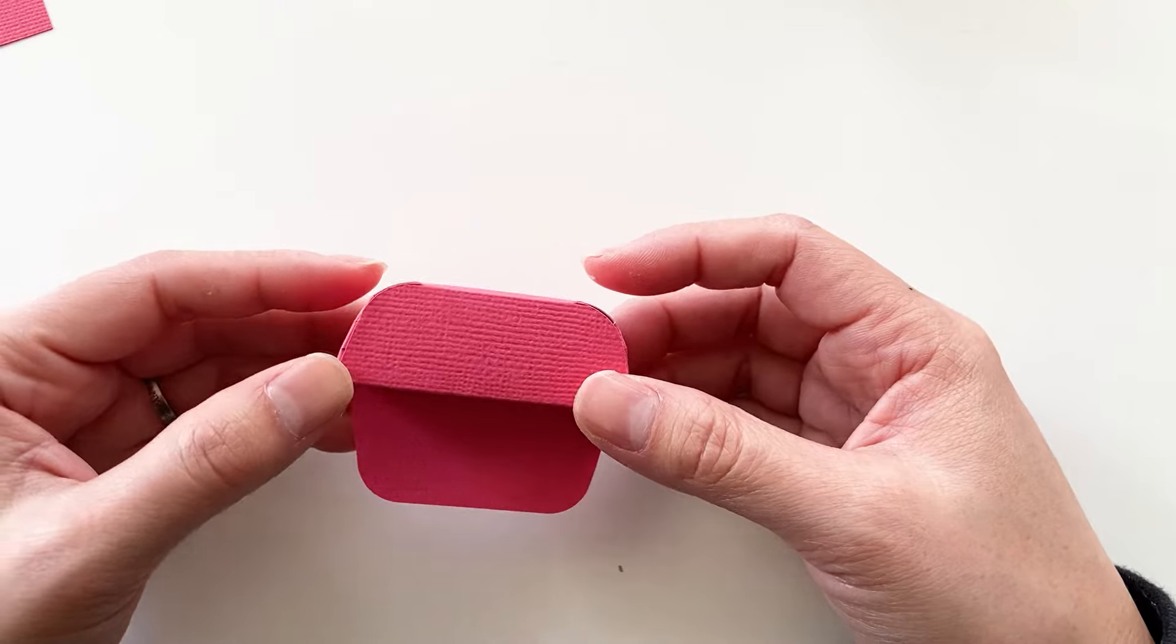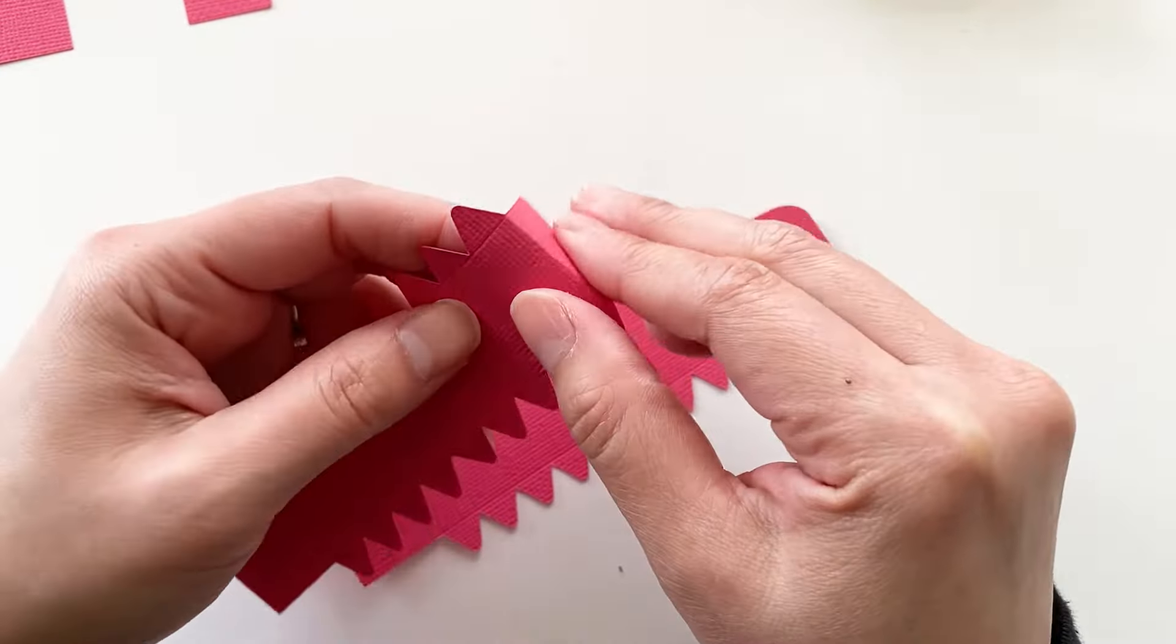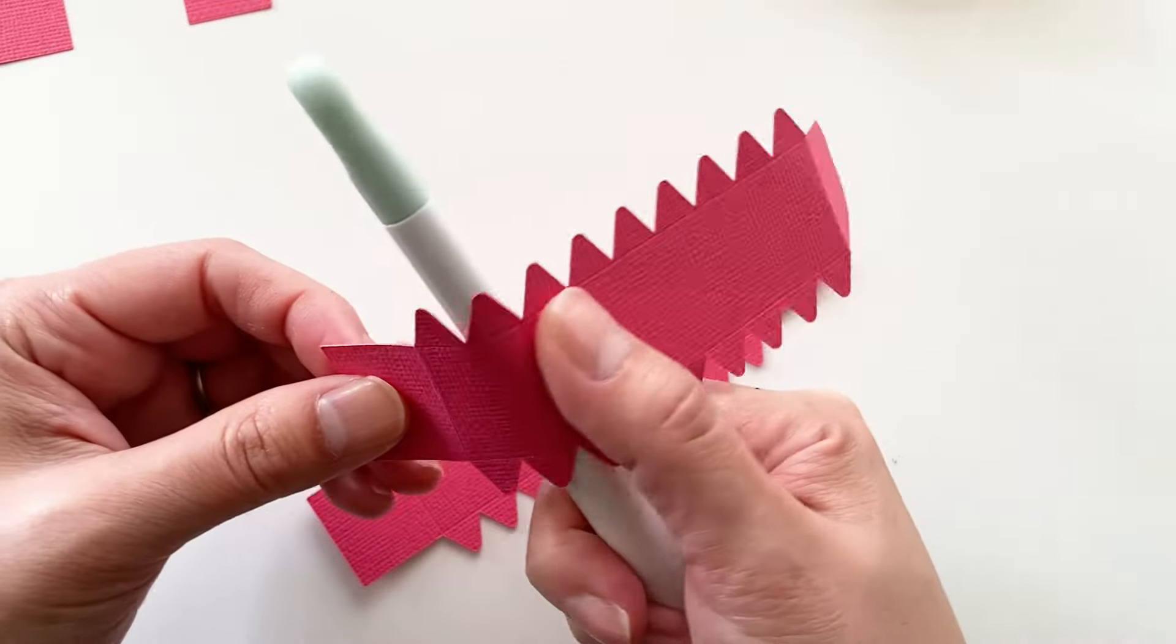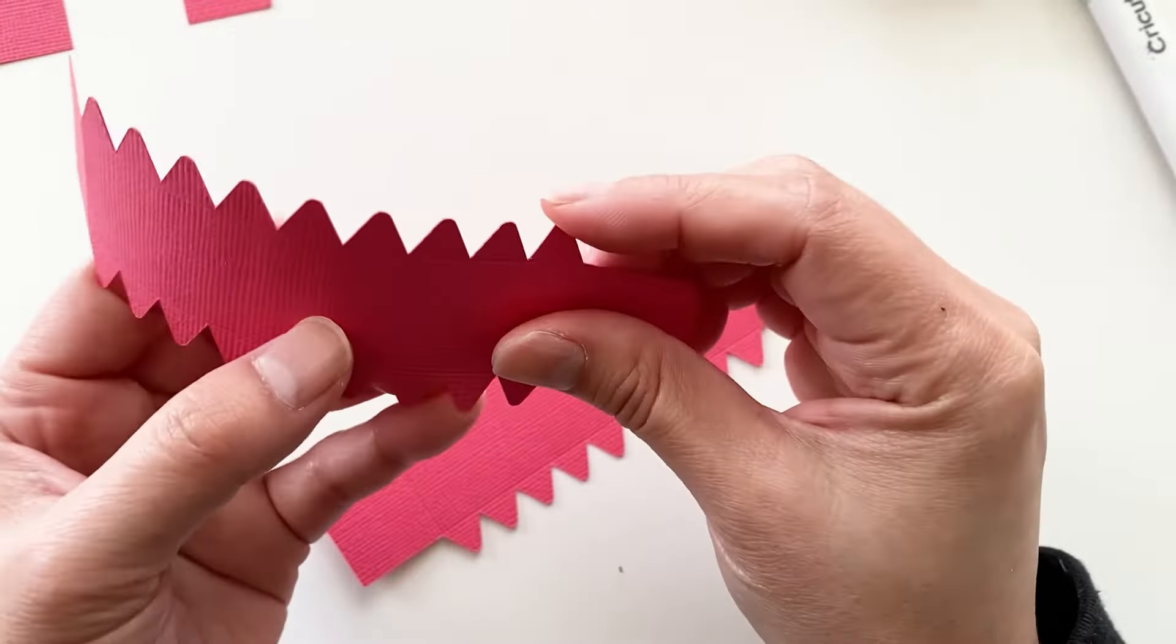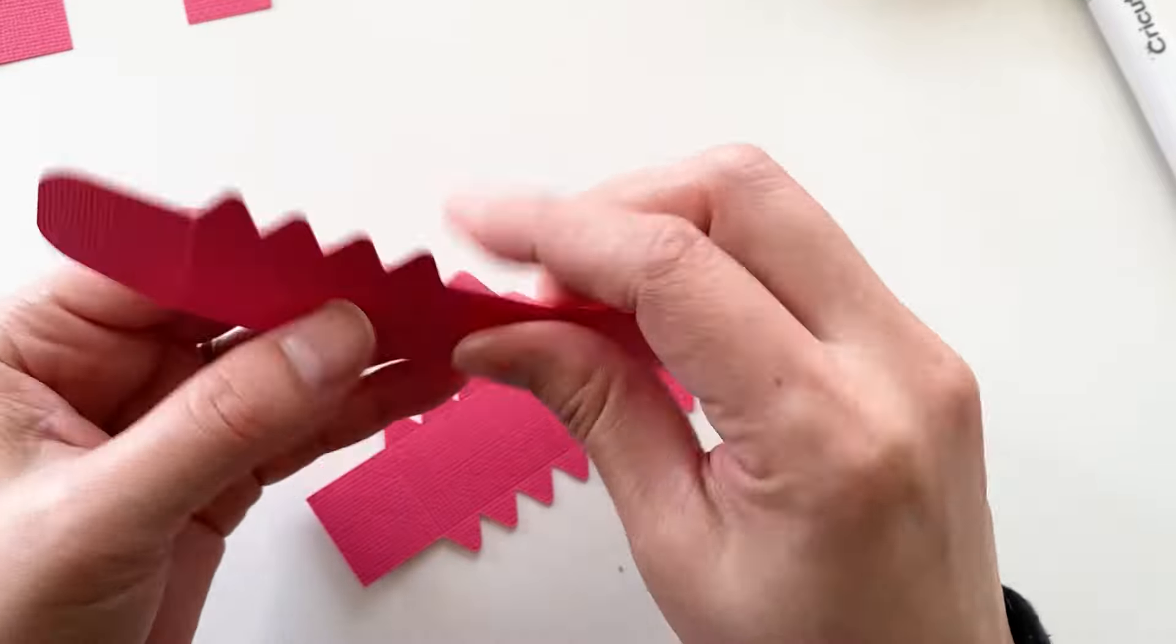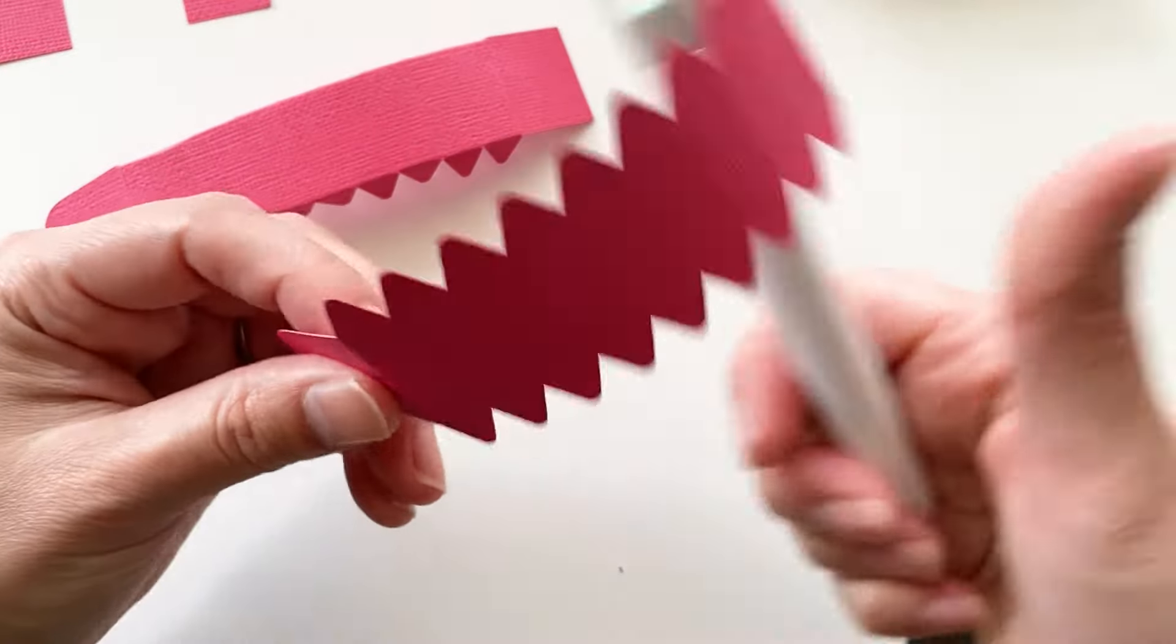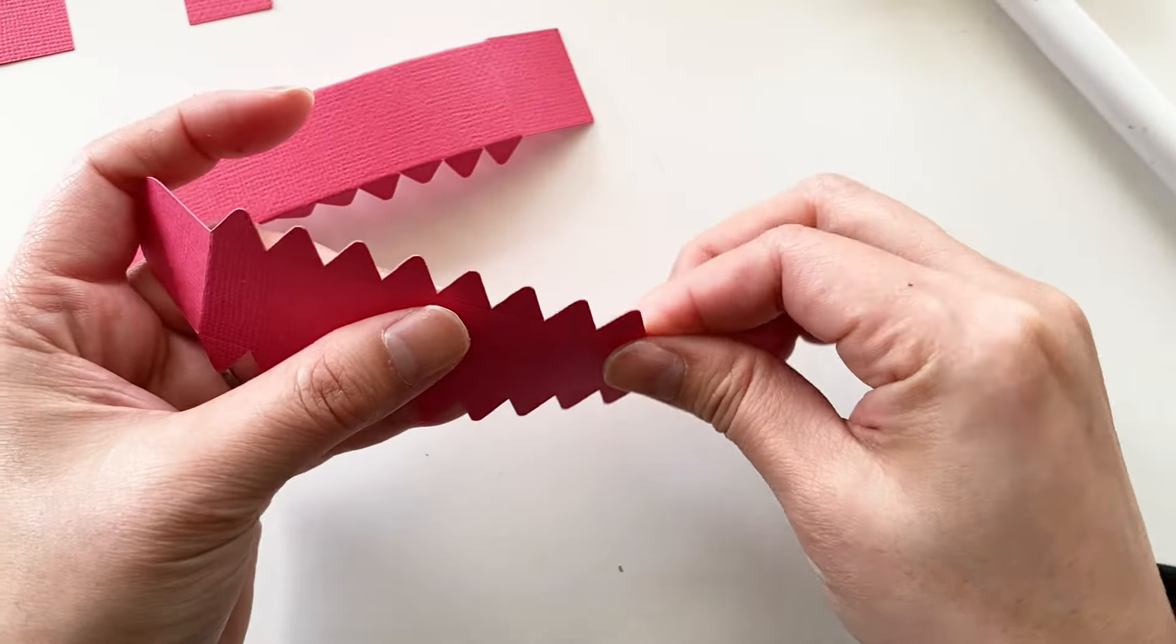The lid is done too. Grab these two pieces. Fold the tabs down first and curl the middle section. Fold down the glue tabs. Same as this one, fold down the tabs, curl the middle section. Fold down the tabs.